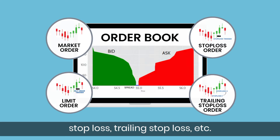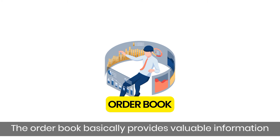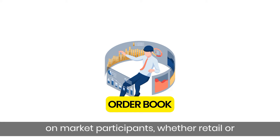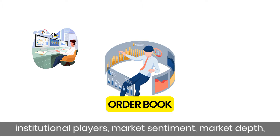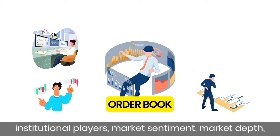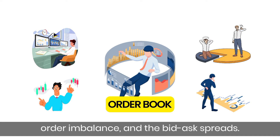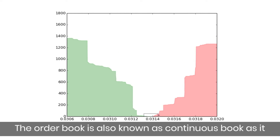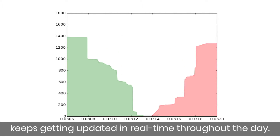Trailing stop loss, etc. The order book basically provides valuable information on market participants — whether retail or institutional players — market sentiment, market depth, order imbalance, and the bid-ask spreads. The order book is also known as the continuous book as it keeps getting updated in real time throughout the day.